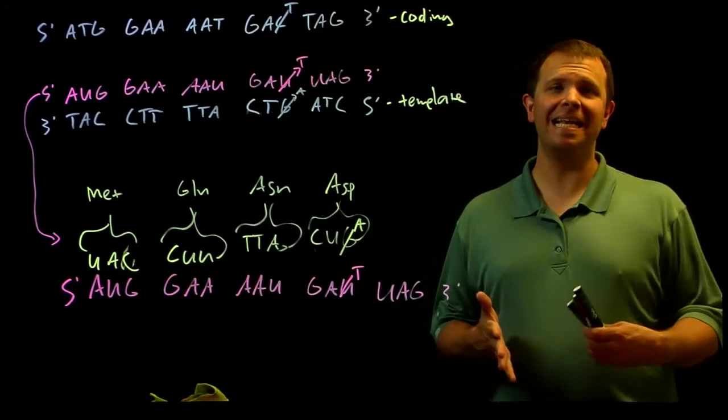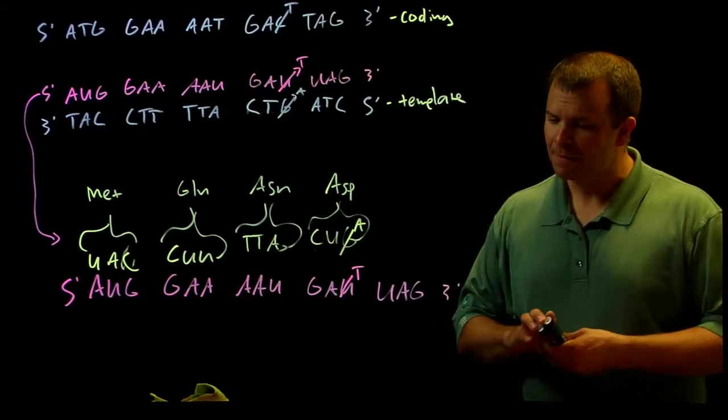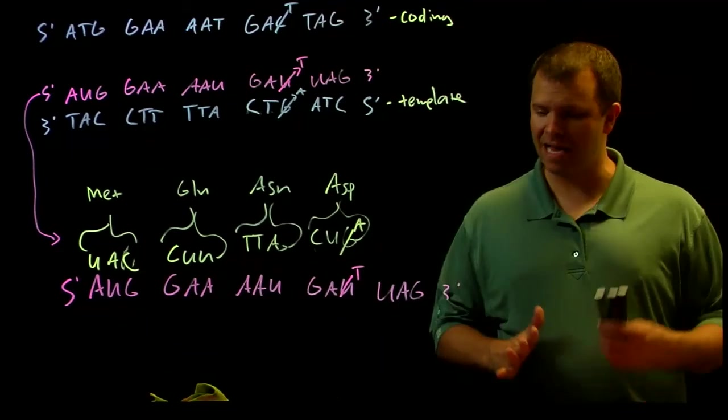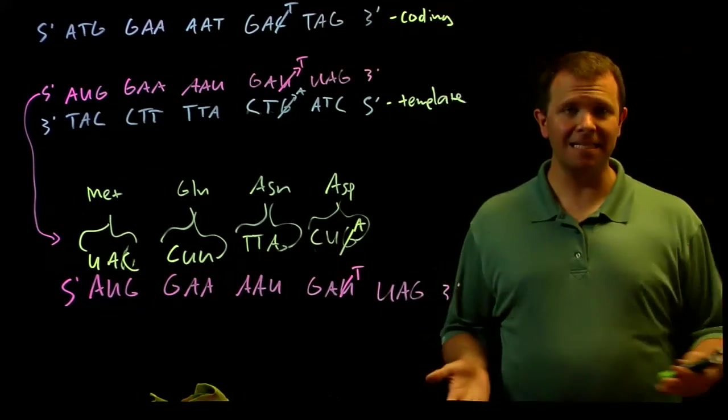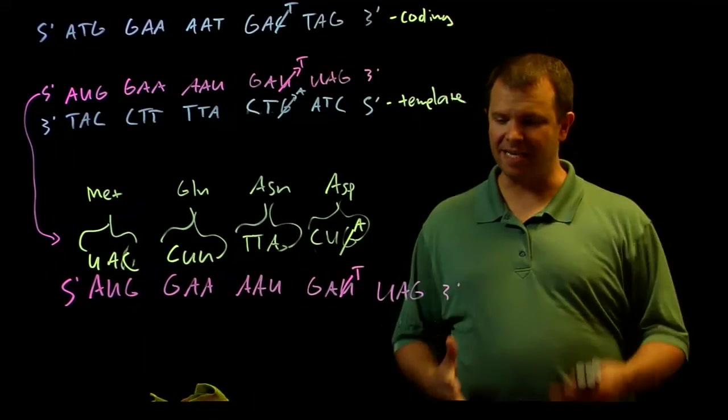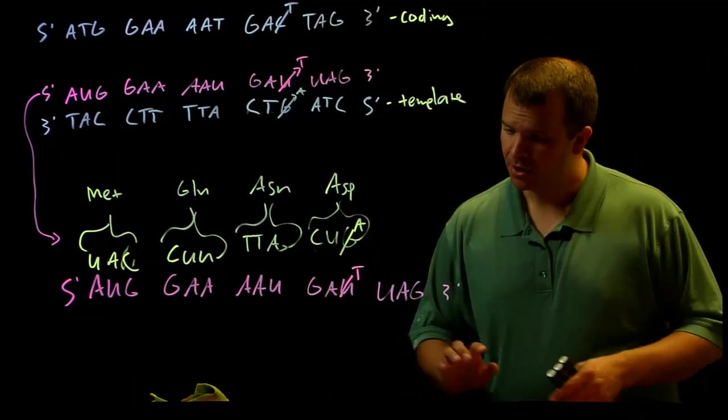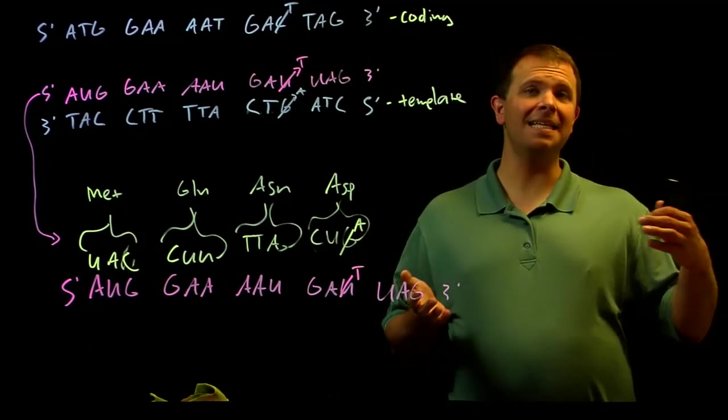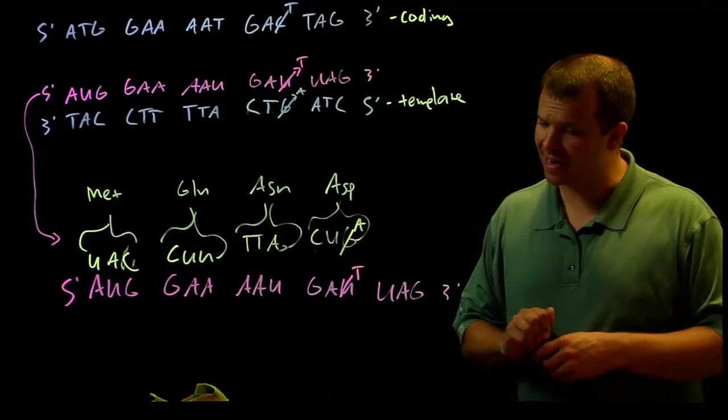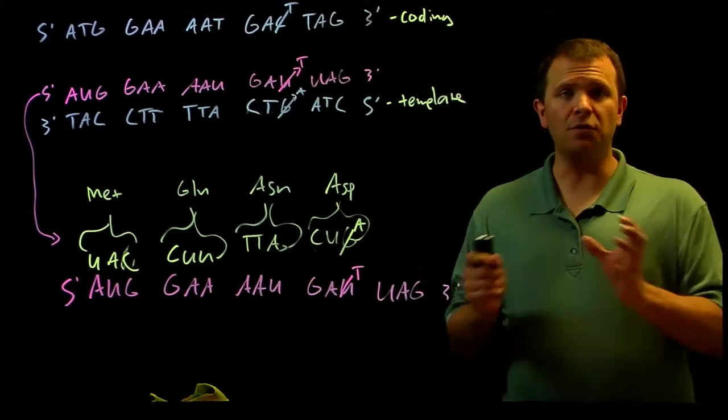DNA carries genes that direct the function of the cell because those genes encode instructions for making proteins. Not just enzymes like Beadle and Tatum found, but every protein in your cell has instructions that are encoded on that cell's DNA. And these instructions here are first transcribed into messenger RNA and then translated into polypeptides, which fold up into proteins.